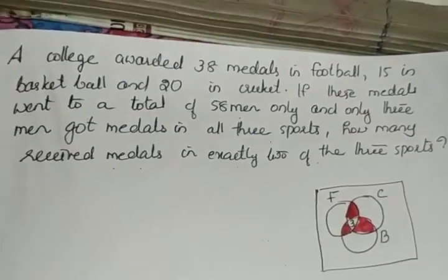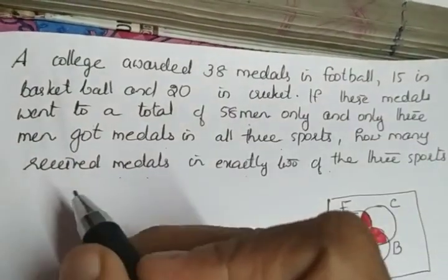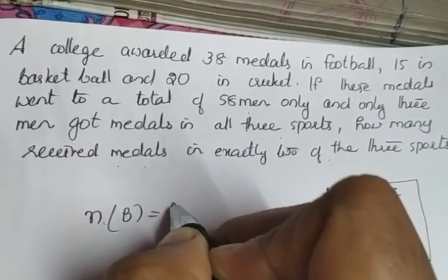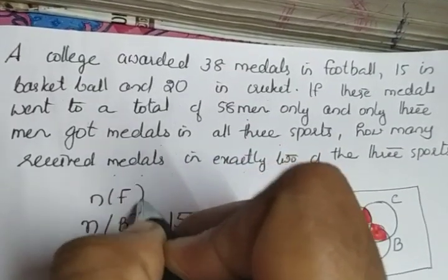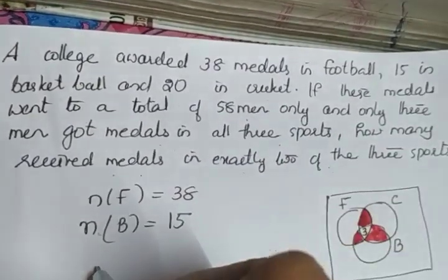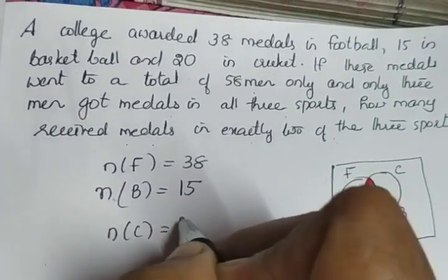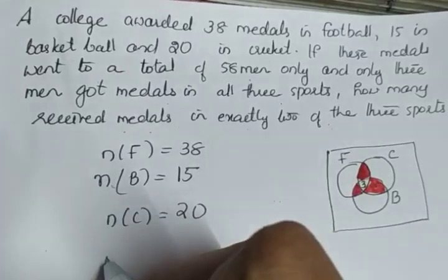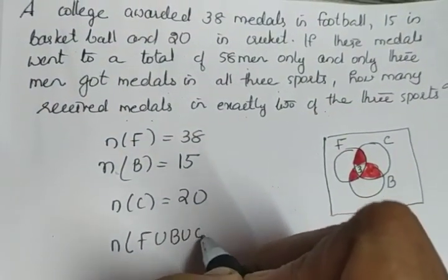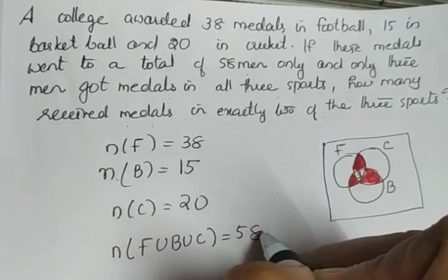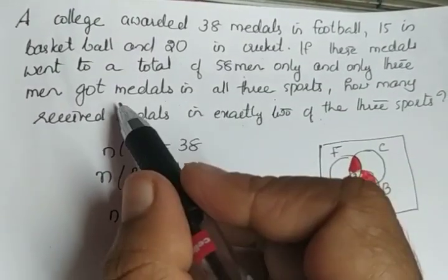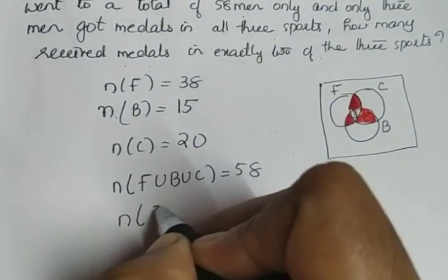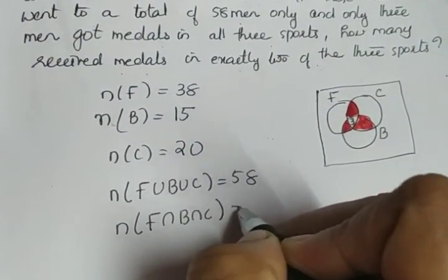Let's write the given details. N(B) = 15, N(F) = 38, N(C) = 20, and the total N(F ∪ B ∪ C) = 58. The 3 men who got all 3 medals represents N(F ∩ B ∩ C) = 3.